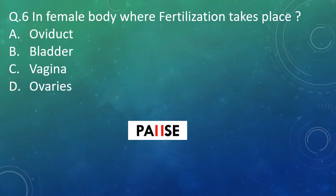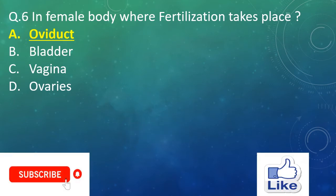Question 6: In the female body, where does fertilization take place? Option A: oviduct. Option B: bladder. Option C: vagina. Option D: ovaries. And the right answer is Option A — oviduct.